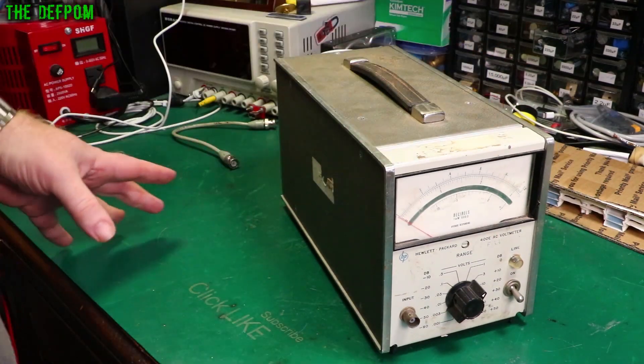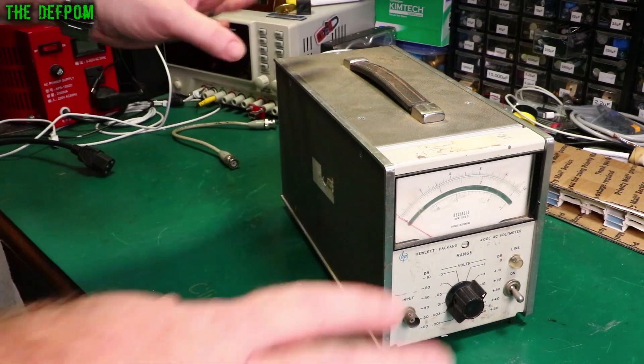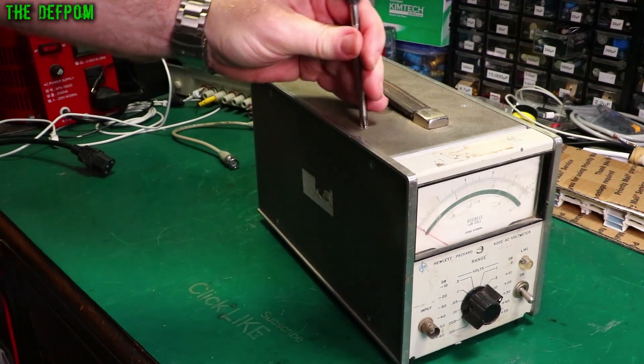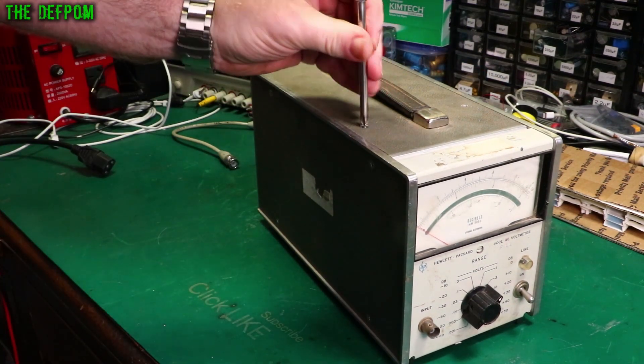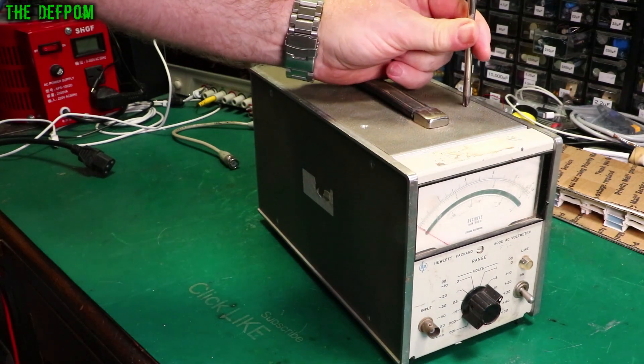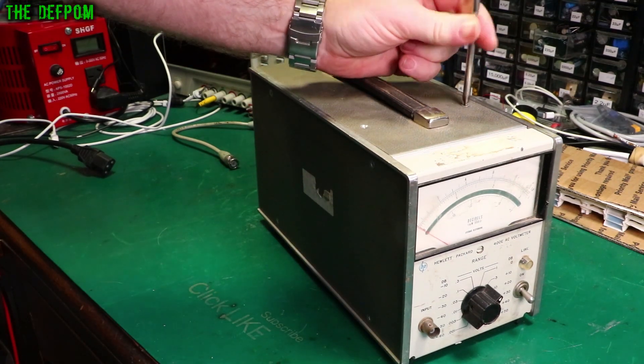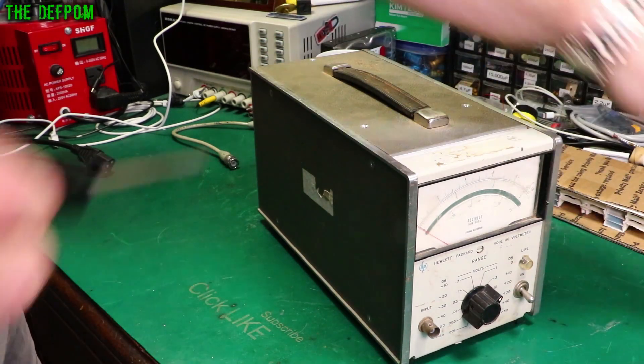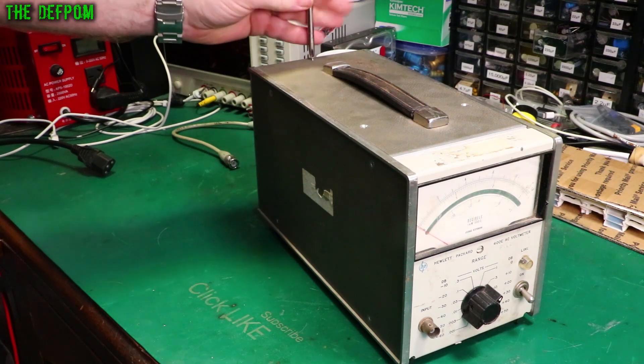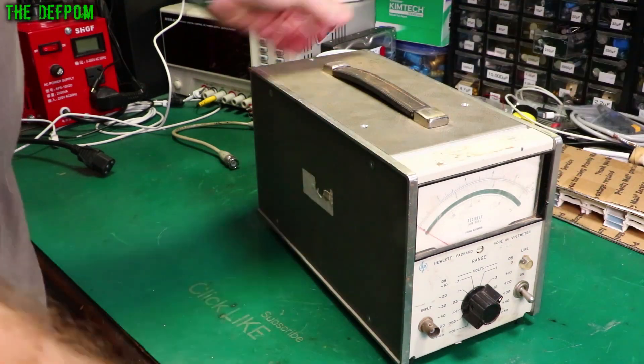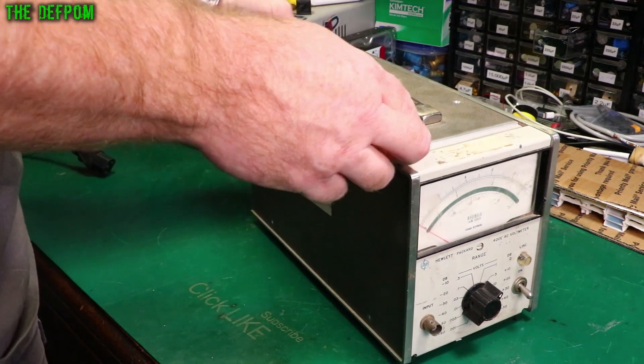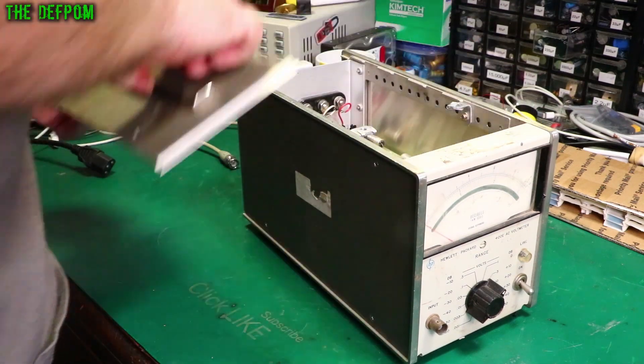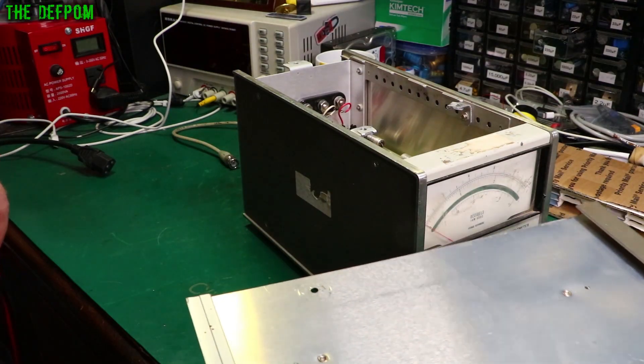So before we power this thing up I'm going to pull it apart and have a look inside because I don't know what the story is with it. I have no idea. So we're going to open the case up. I'm pretty sure it's just three screws in the top panel and that will then slide off backwards. I do like the way they designed these things. There we go. Top panel, nothing exciting there.